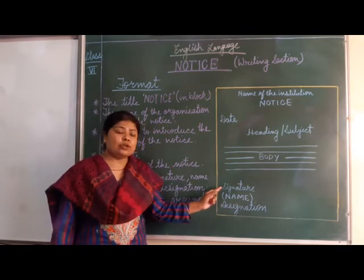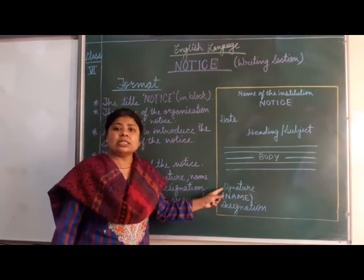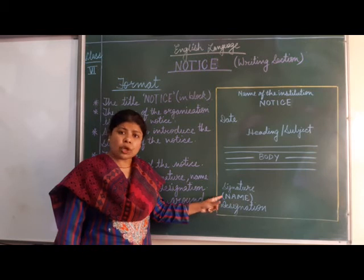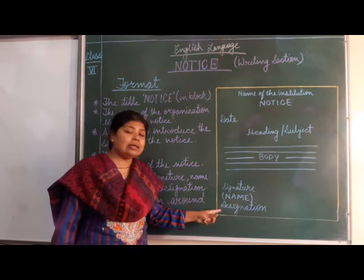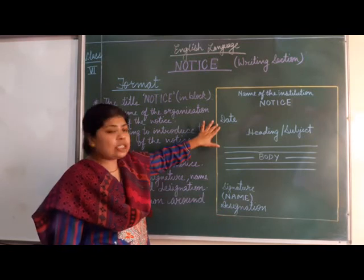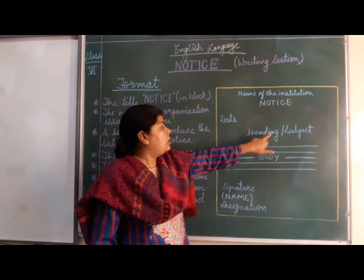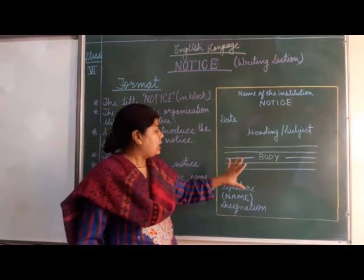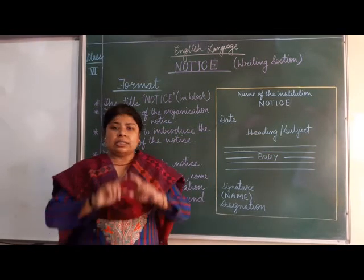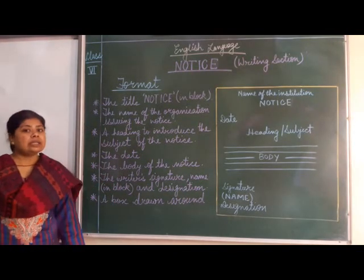Then, as mentioned, leaving one or two lines, we will write and mention the space for the signature on the left side. Then the name of the person who has signed, written in block letters, and the designation at the last. These three on the left side. The date on the left side. The name of the organization and the word NOTICE just in the middle. The heading also just in the middle. Then the whole body, and after writing it, making the whole thing inside a box. So this is the basic format we are going to follow to write a notice.